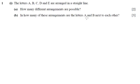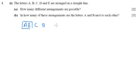For B, we've now got A and B having to be next to each other. So when that happens, I like to treat them as one object. Then we've got C, D and E as our other three objects. So we've got four objects altogether.